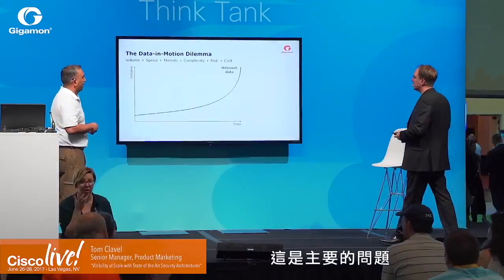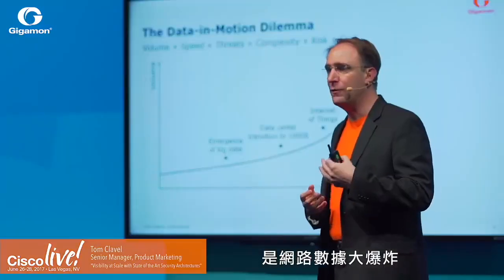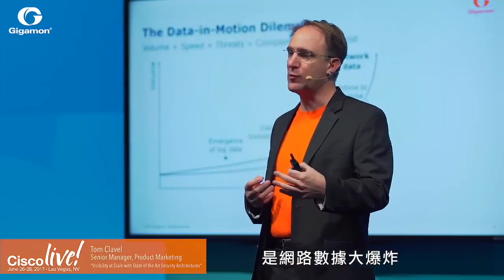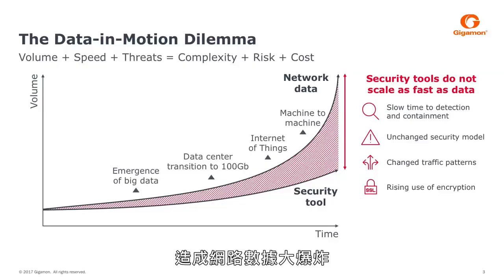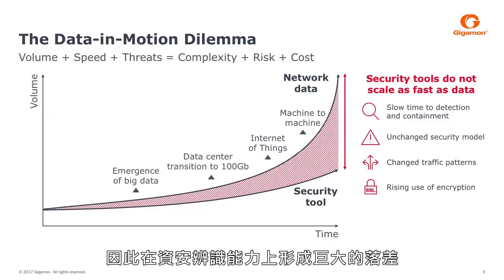The major issue is that our network data is exploding on the network. We have seen explosions due to IoT and machine-to-machine communications. At the same time, our security tools have not been able to scale. And that has created a major gap in our ability to identify security issues.